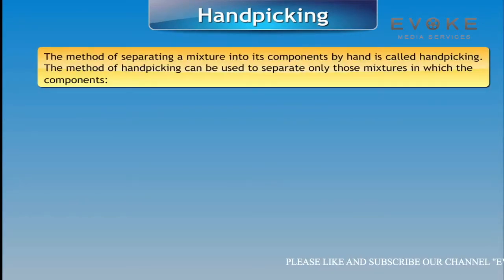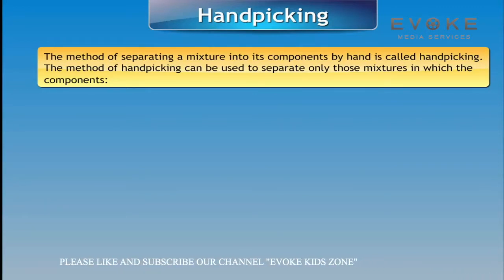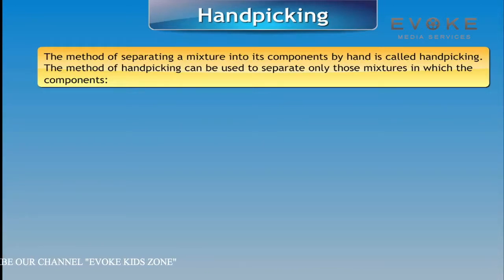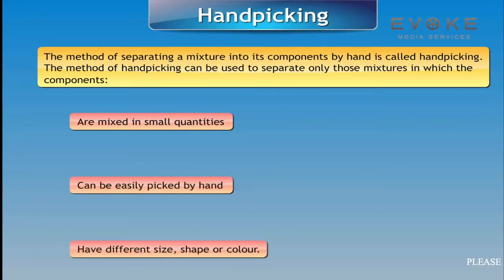Hand-picking: The method of separating a mixture into its components by hand is called hand-picking. This method can be used to separate only those mixtures in which the components are mixed in small quantities, or they can be easily picked by hand, or they have different sizes, shapes, or colors.